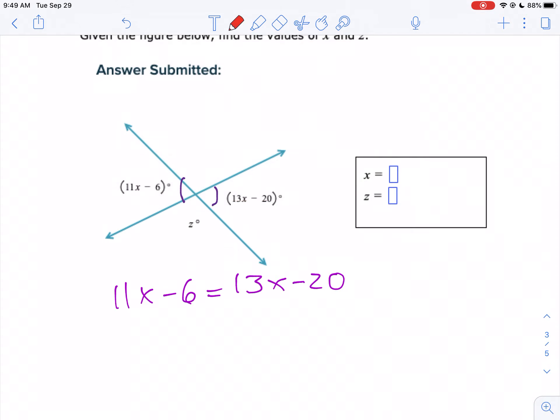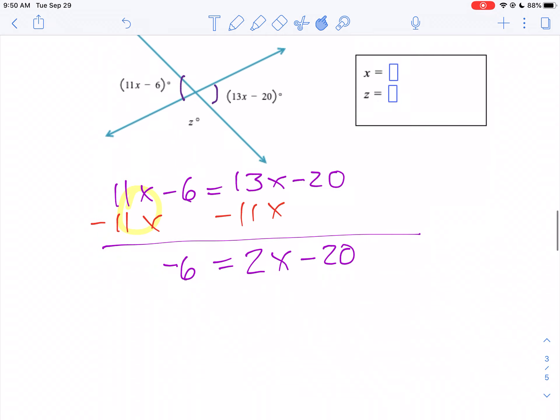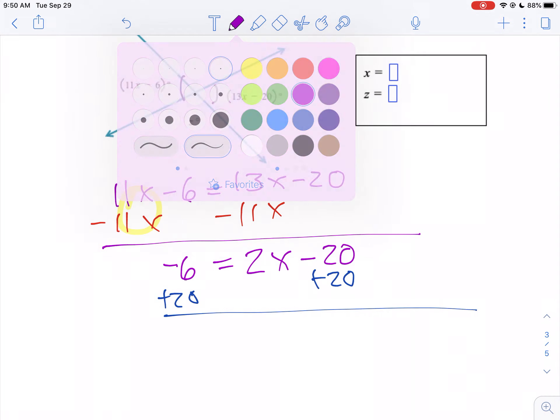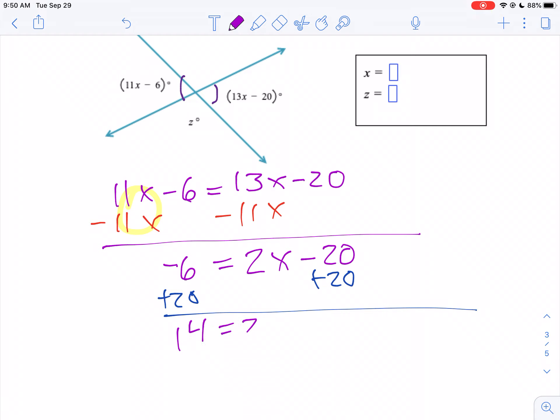Well, the algebra, I always like to move the smaller X. You want all the X on one side, so we're going to minus 11X from both sides. So bring down the negative 6, because 11X minus 11X is 0, equals 13 minus 11 is 2X minus 20. Then we'll add 20 to both sides, because the opposite is subtracting, because you want to get X by itself. So we're going to add 20 to both sides. And you get negative 6 plus 20 is 14, equals 2X. We'll divide both sides by 2, X equals 7. And that's what you're supposed to find.